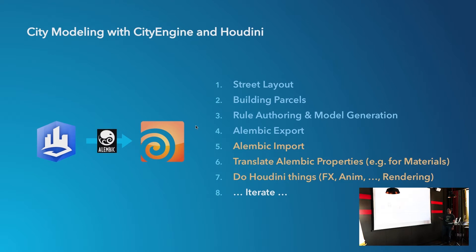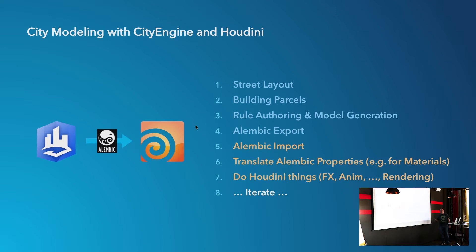You import the Alembic, translate all the metadata — CGA reports, generic attributes — into Houdini semantics. And then you can do effects, animations, smoke, fire, rendering. The problem is iteration: you realize you forgot a building, so you start all over again — export, import, export, import. Let's look at a specific example of that.